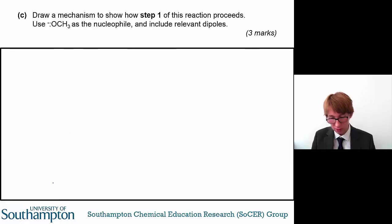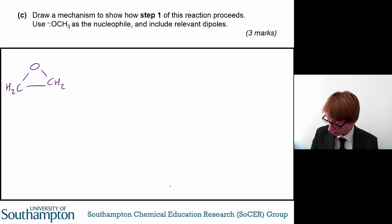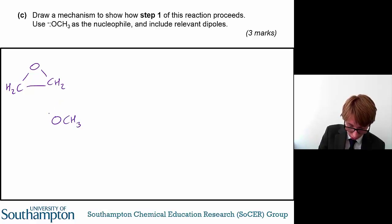So now for the trickiest part of this question, you need to draw a mechanism to show how step one of the reaction proceeds. You need to use the methoxide ion, that's what that OCH3 minus group is called, as the nucleophile, and include your relevant dipoles. And this is for three marks, so you're looking for three key things in particular. So let's draw this out. Again, my drawing is bad, I apologize. I'm not an artist, I'm a chemist. Shame, really. But anyway, so there is your ethylene oxide, and here is your nucleophile.